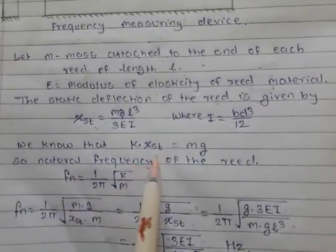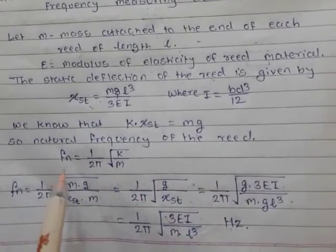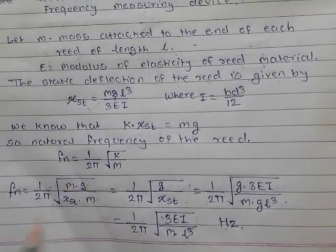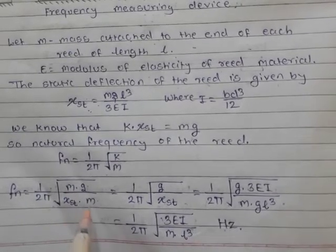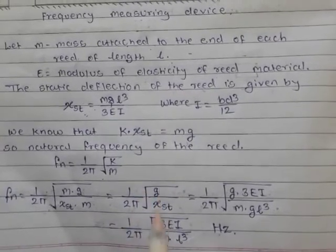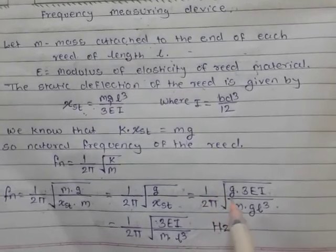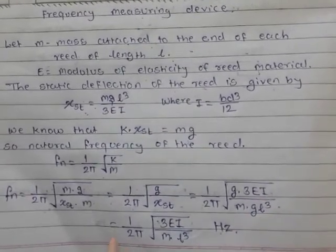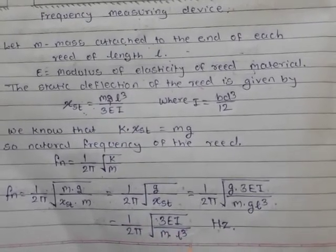We know that k into Xst equals mg. So the natural frequency of the reed equals fn equals 1 upon 2π under root k upon m. Then fn equals mg upon Xst into m, which equals 1 upon 2π under root g upon Xst, equals 1 upon 2π under root g into 3EI upon mgl cubed, which finally reduces to 1 upon 2π under root 3EI upon ml cubed, hertz.